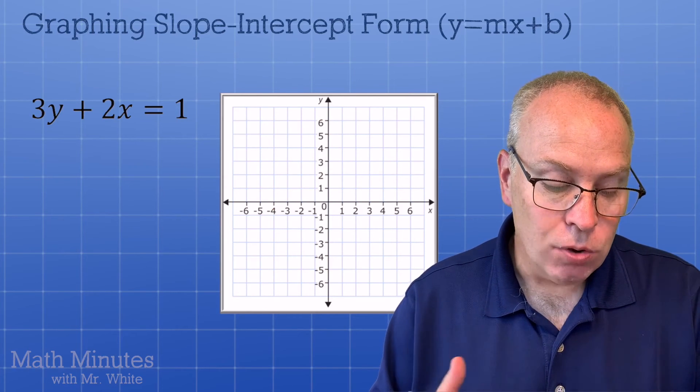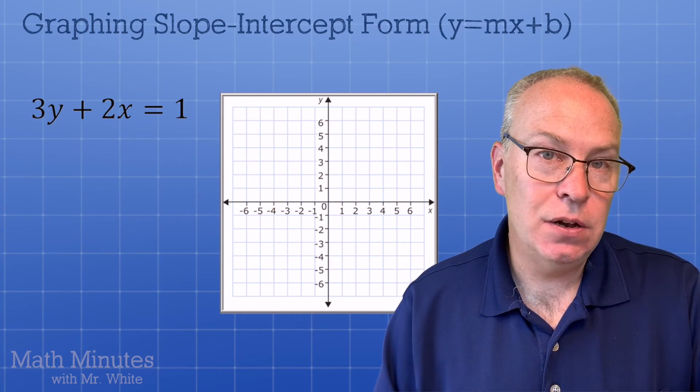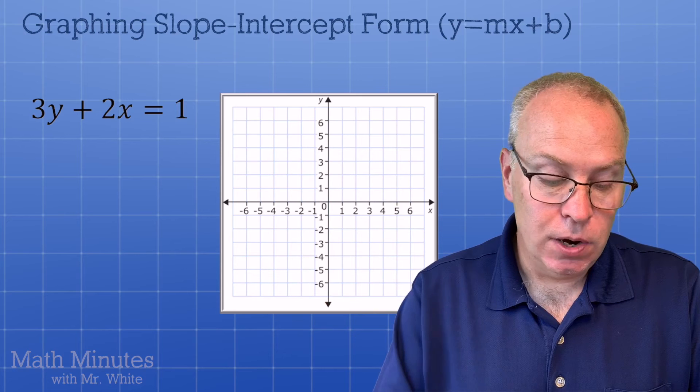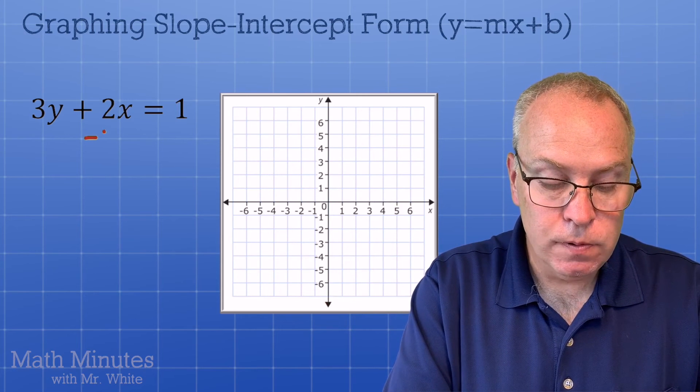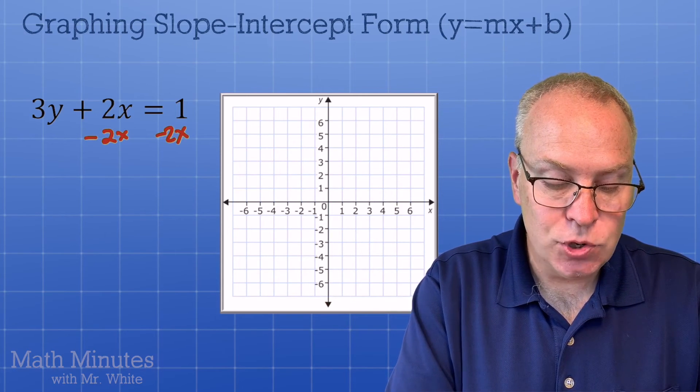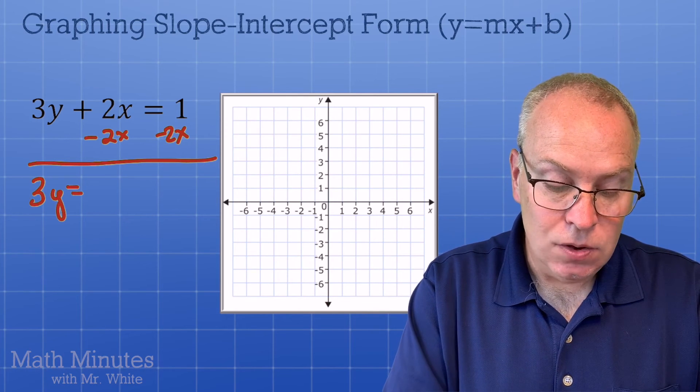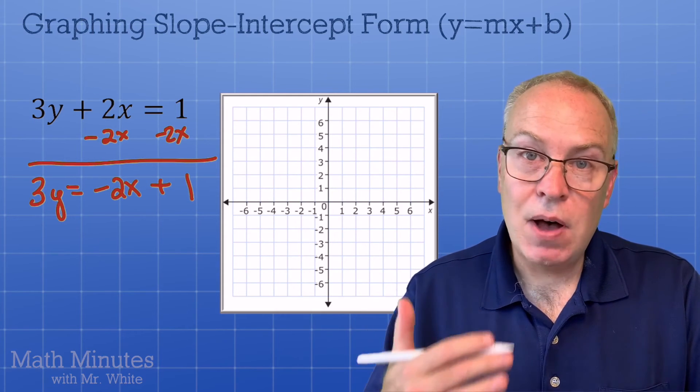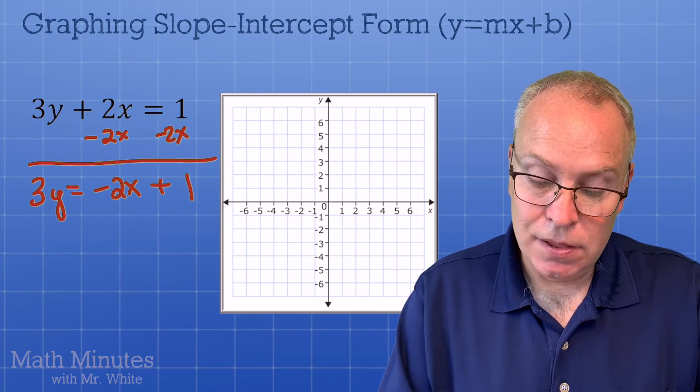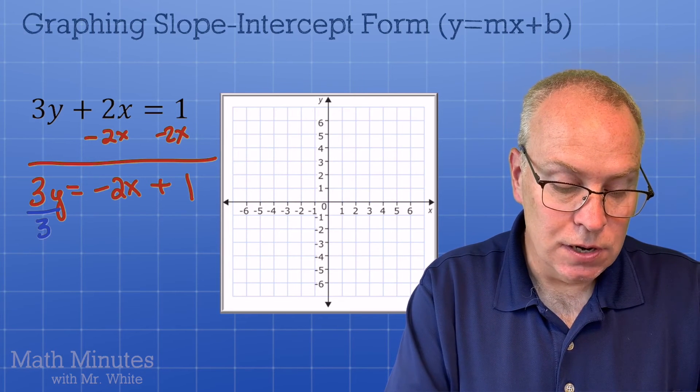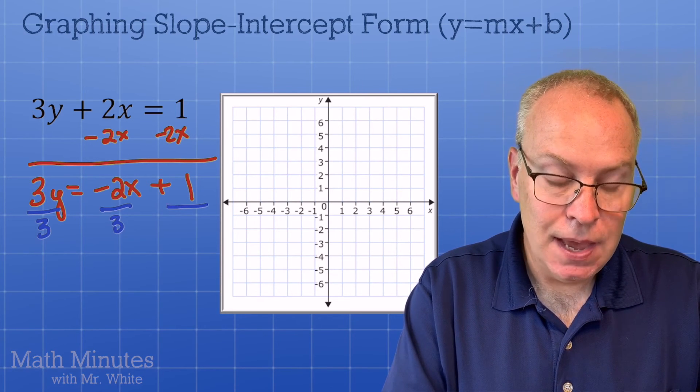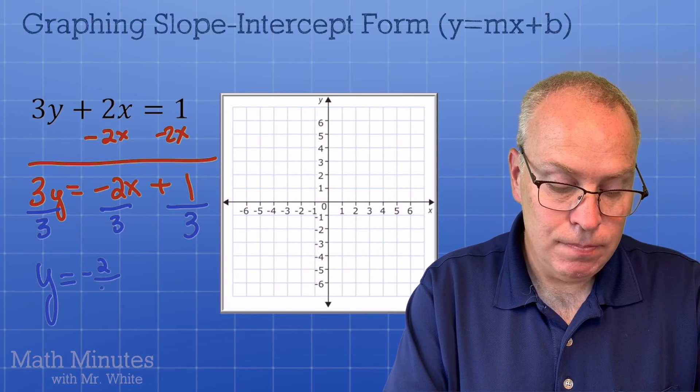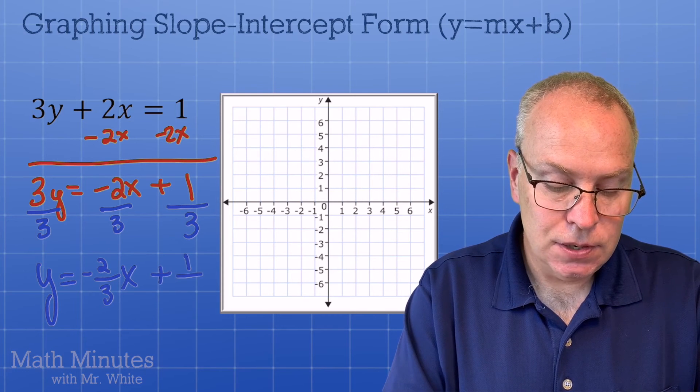I'm giving this to you in what's called standard form. So in this example, we're going to need to solve for y. So here we go. I'm going to move the 2x to the other side by subtracting it over there. 3y equals negative 2x plus 1. Now, I need to divide everything by 3, even the 1. So we're going to divide by 3, divide by 3, and divide by 3.